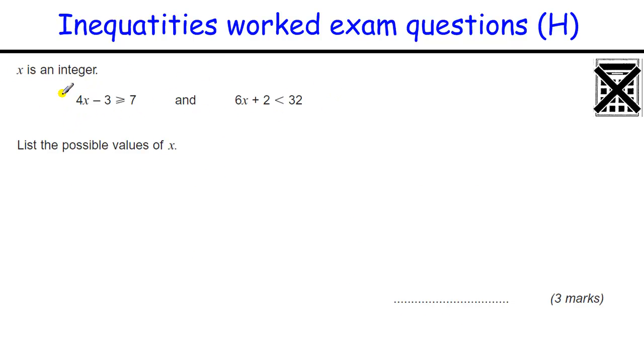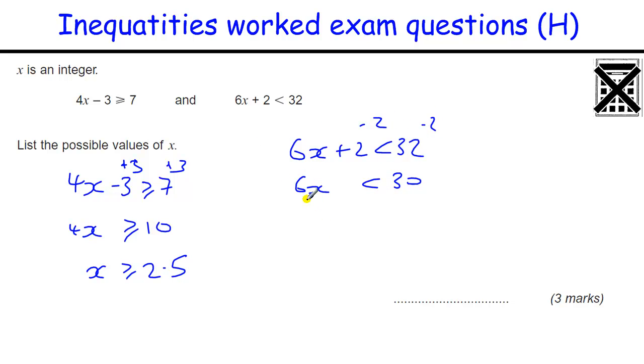Okay, so we're giving it all in one go now, so we've got to solve that inequality, 4x minus 3 is greater than or equal to 7, so we add 3, so we solve that inequality, not the equation, 4x is greater than or equal to 10, divide by 4, x is greater than or equal to 2.5. This one, 6x plus 2 is less than 32, take away the 2 to give 6x is less than 30, divide by the 6 to get x is less than 5.